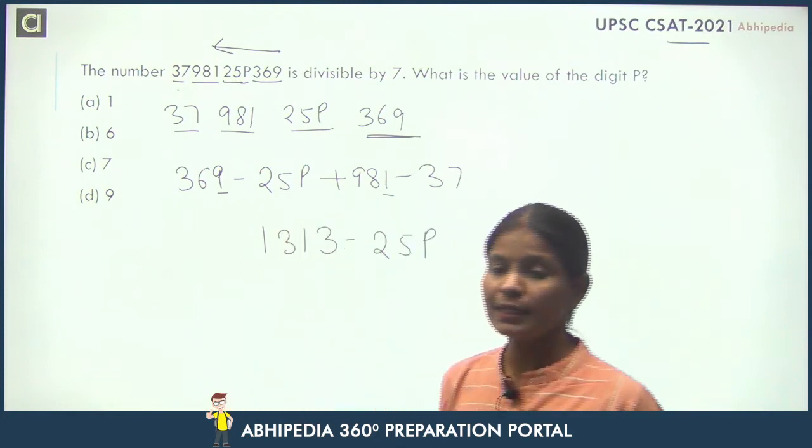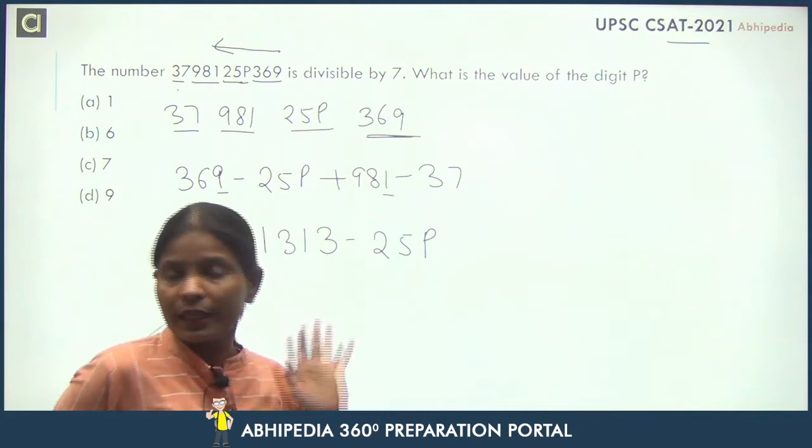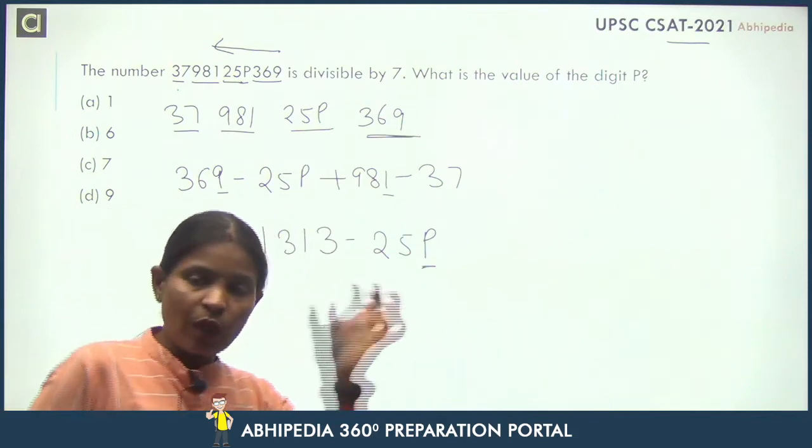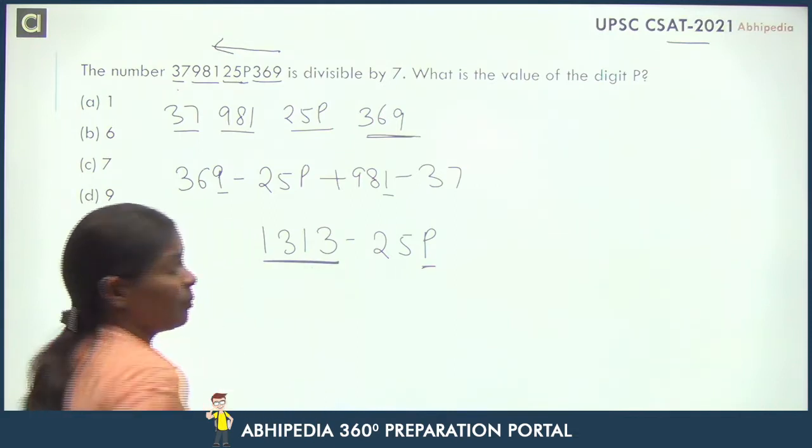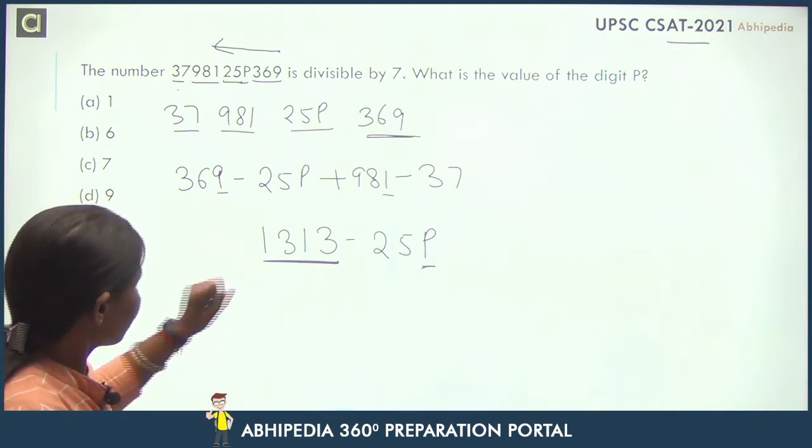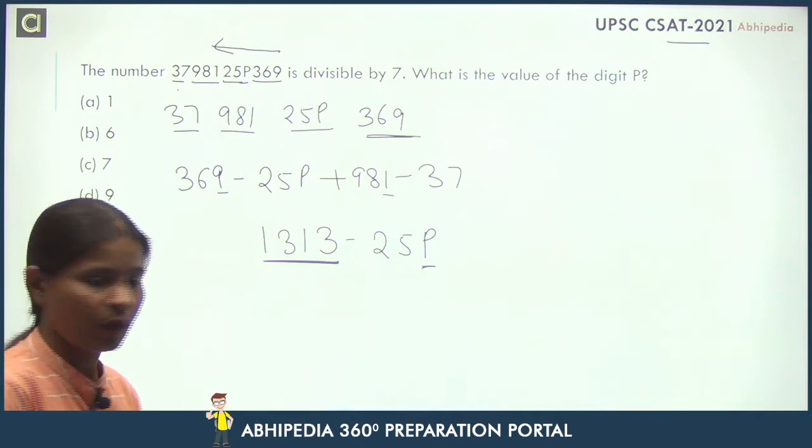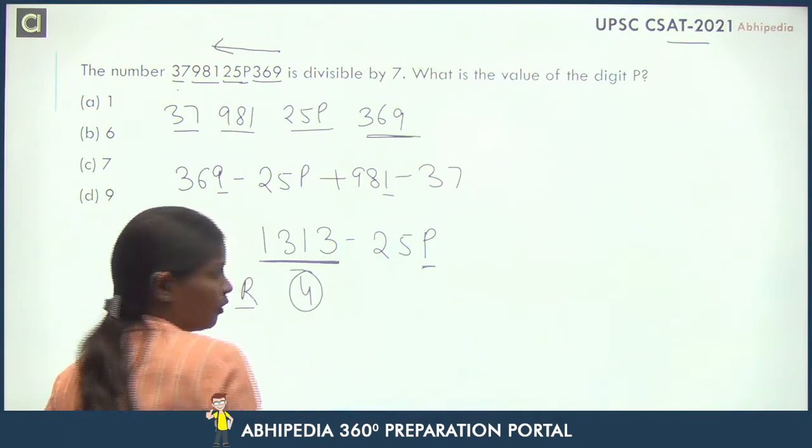So here you can see, we have 1313. Now we have to see what will be the value of this. I have to check this number. If I divide 1313 by 7, this will be 187 times 7 equals 1309, so here we have remainder 4.